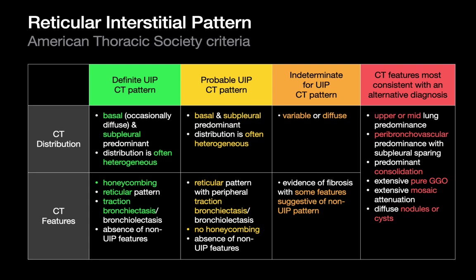Indeterminate for UIP could be an atypical case or something else — we can't be sure if it isn't sarcoid, for example. The final bucket is where we're sure it isn't UIP: if the disease is really upper lung predominant, not reticular predominant, or mostly nodular interstitial pattern, we label it as most consistent with an alternative diagnosis. That's how we communicate our confidence of UIP to the multidisciplinary conference to determine an IPF diagnosis.